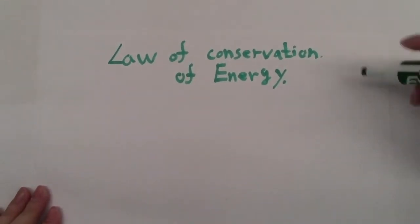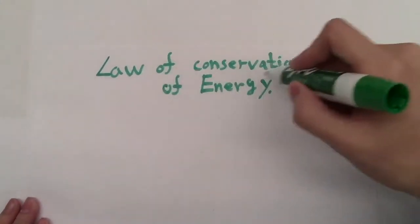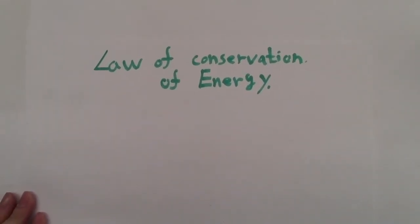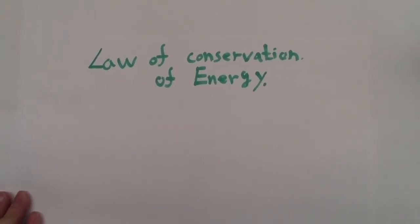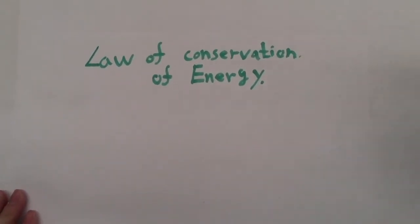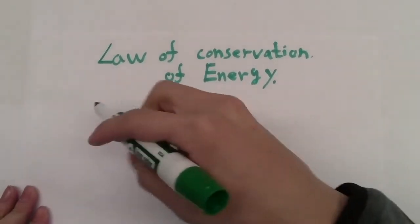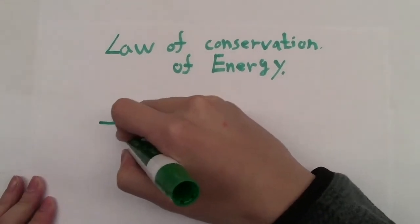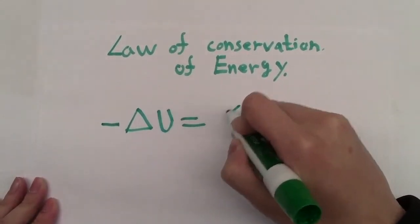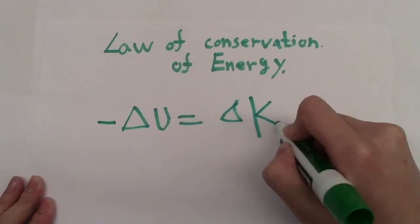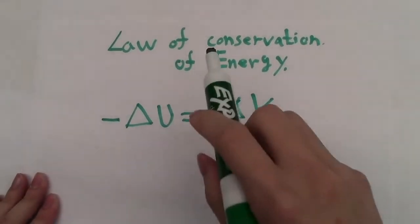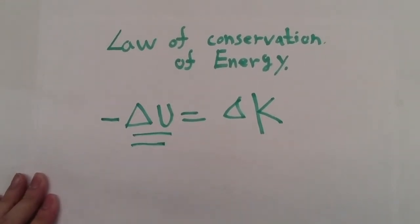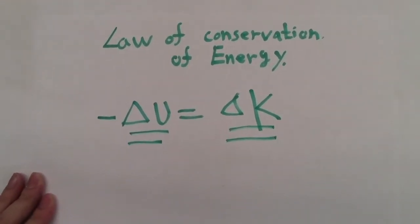To derive the escape velocity, the first thing you need to know is the law of conservation of energy. This law states that the total energy in the system will always be the same. By this law, the gain of kinetic energy will equal the loss of potential energy. In mathematical notation, we have the equation negative ΔU equals ΔK. This is such an important law in physics. ΔU is the change of potential energy, and ΔK is the change of kinetic energy.